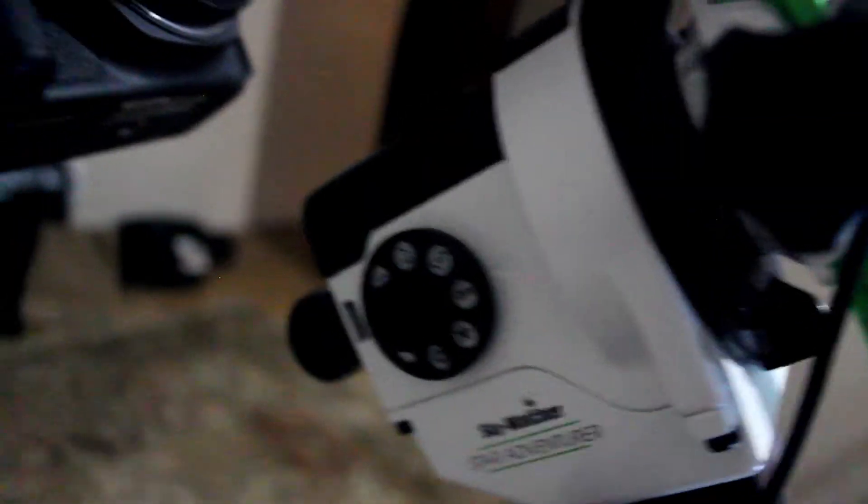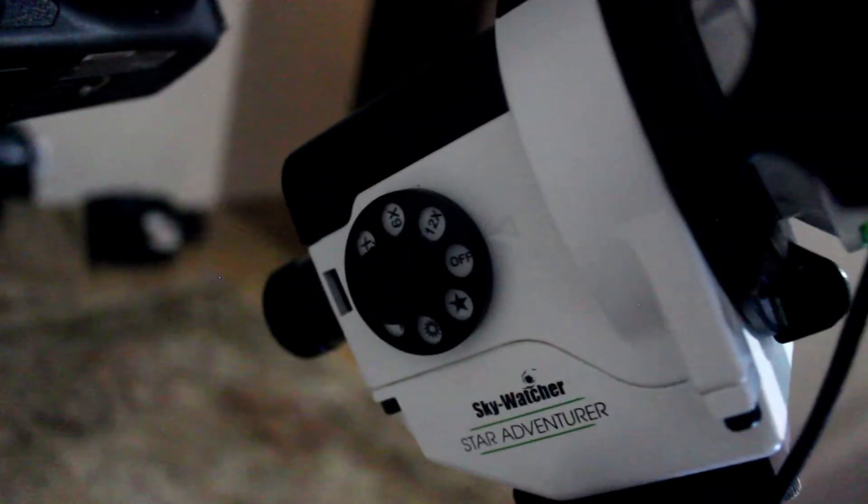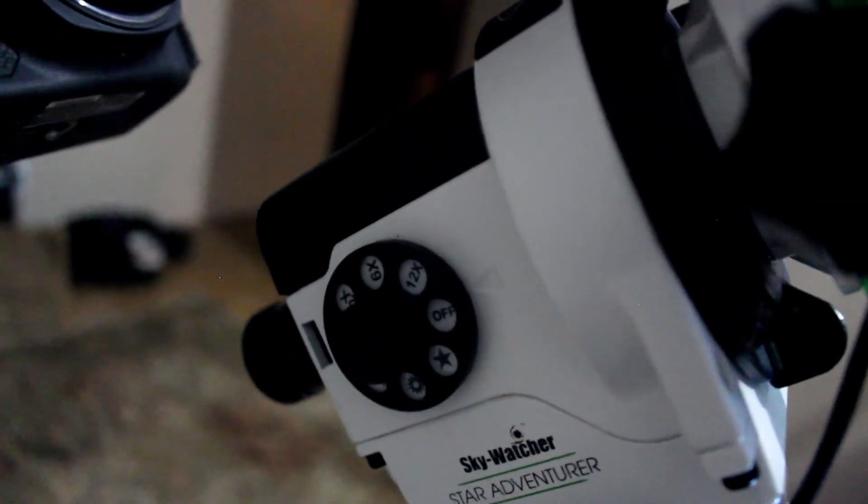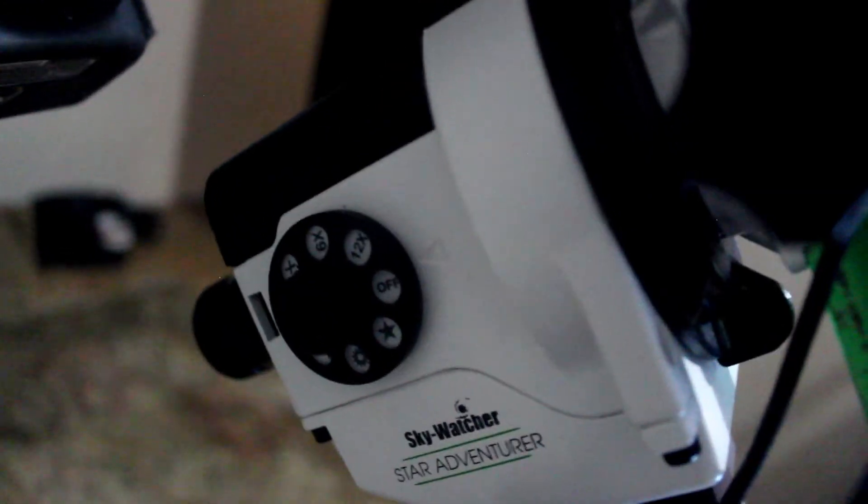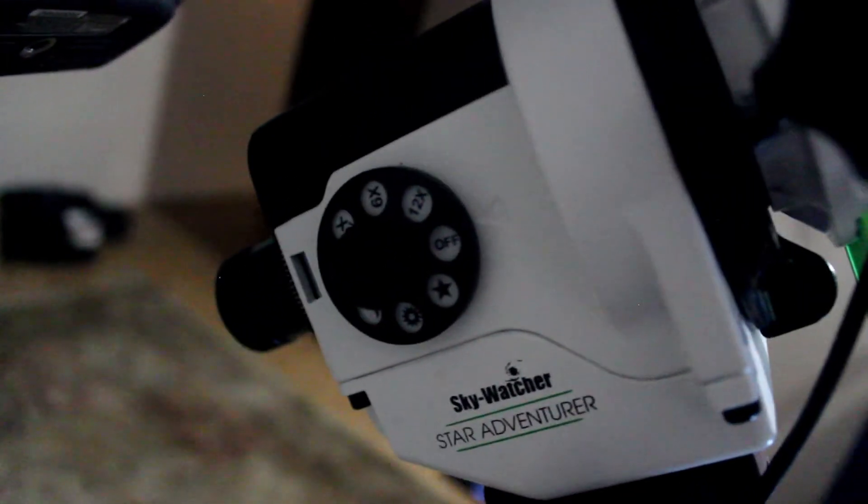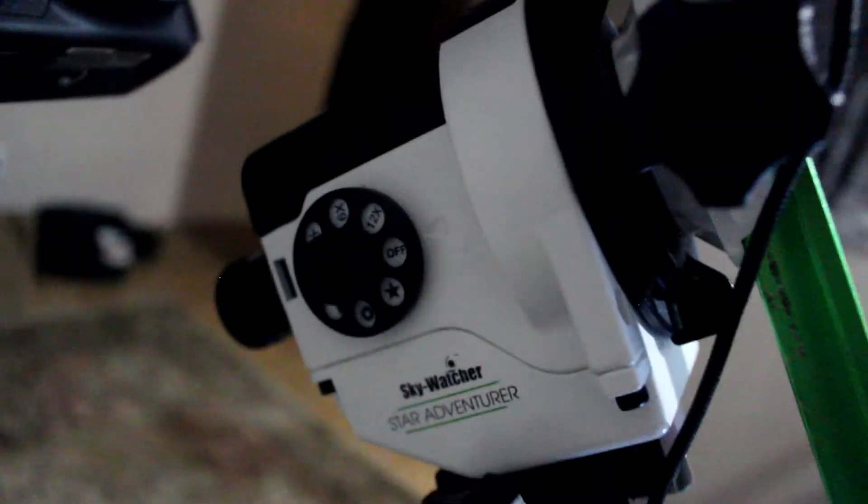It's got a polar scope. So you can polar align. I don't think it comes with the little illumination, the red illumination thing. Little light. I think I have to buy one. But they're really, really cheap. Yeah. It's portable. I love it. Take it out.